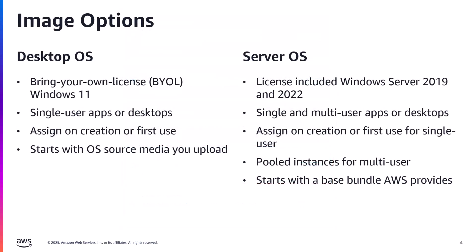Citrix on WorkSpaces Core supports two different types of operating systems: bring your own licensed Windows 11 desktops, and license-included Windows Server 2019 and Server 2022. For desktop OS workspaces, you can deploy single user desktops that are either pre-assigned or assigned on first use. The image creation process for Windows 11 starts with uploading the ISO from Microsoft, and additional documentation will be linked in this video's description.